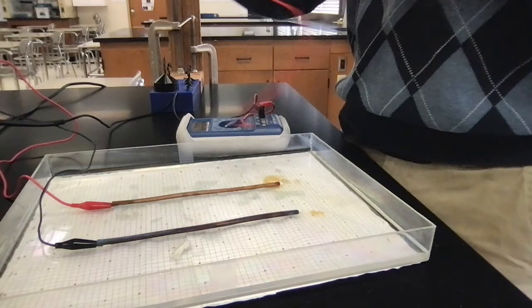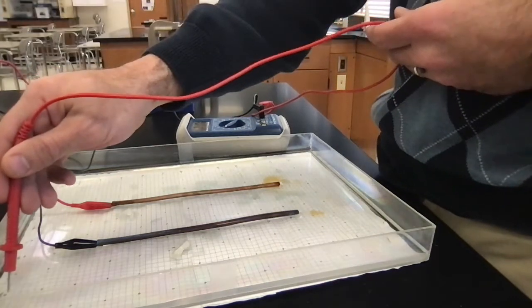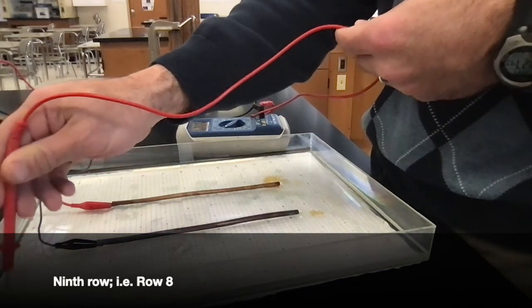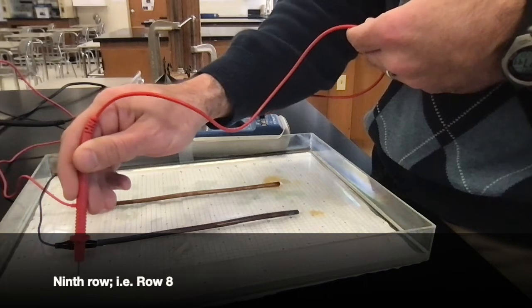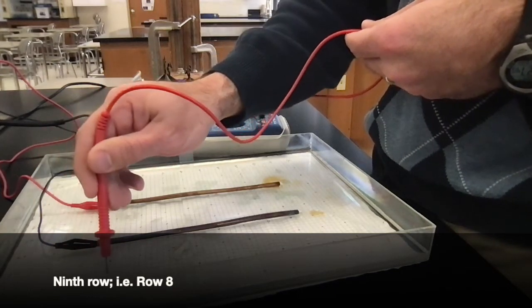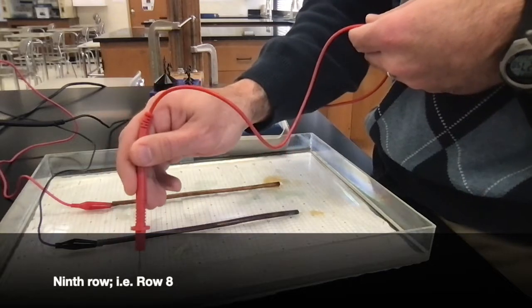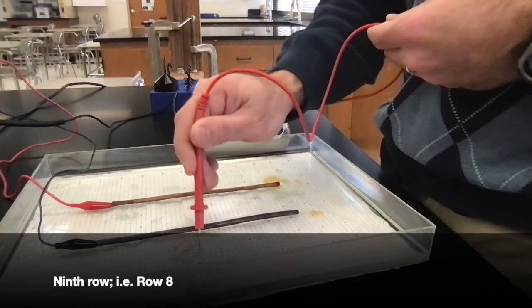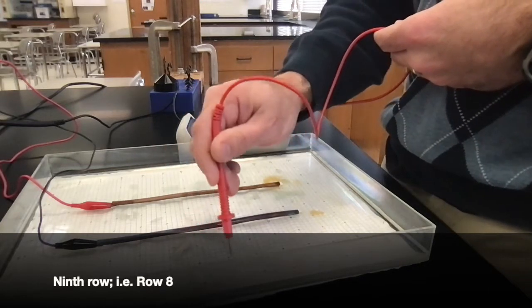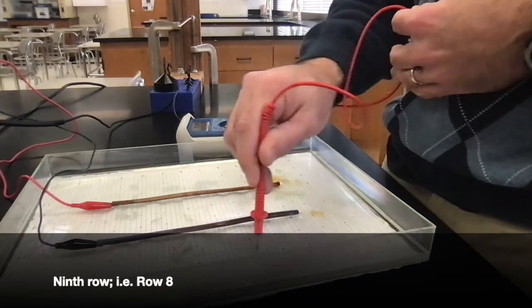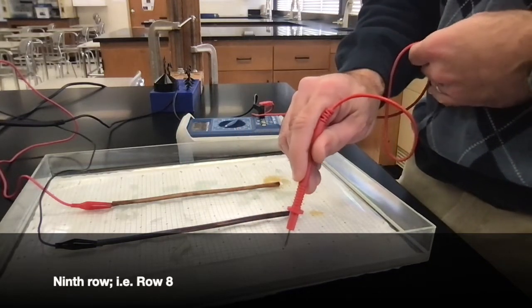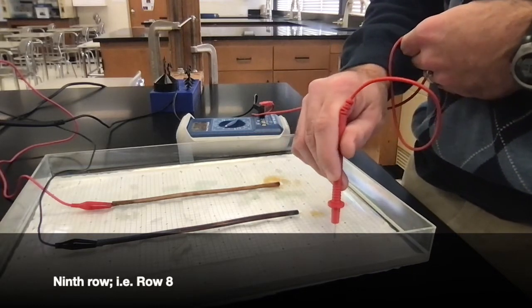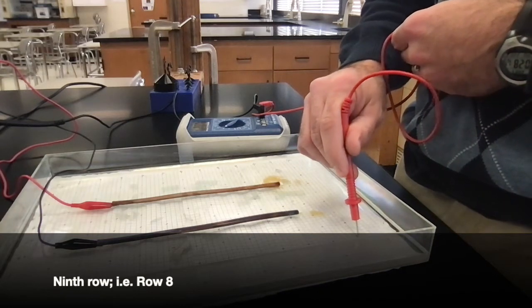The ninth row labeled row 8, second to last. First column labeled 0 is 2.5, 1 is 2.3, 2 is 1.8, 3 is 1.5, 4 is 1.2, 5 is 1.0, 6 is 1.0, 7 is 1.0, 8 is 1.1, 9 is 1.4, 10 is 1.8, 11 is 2.3, 12 is 2.7.